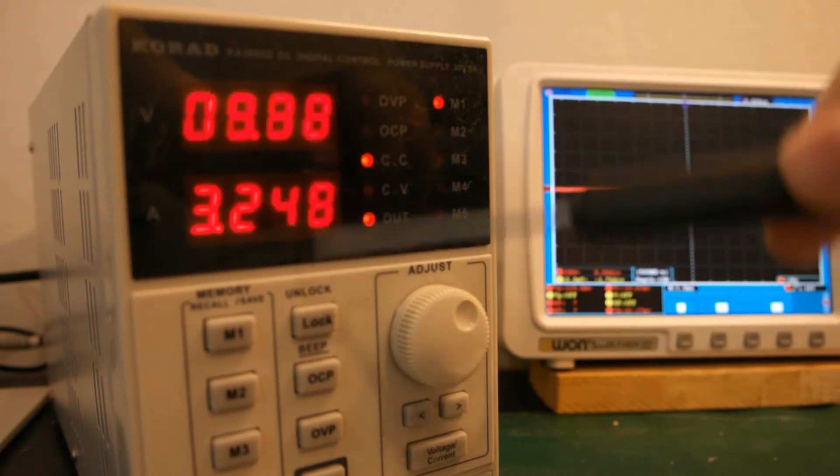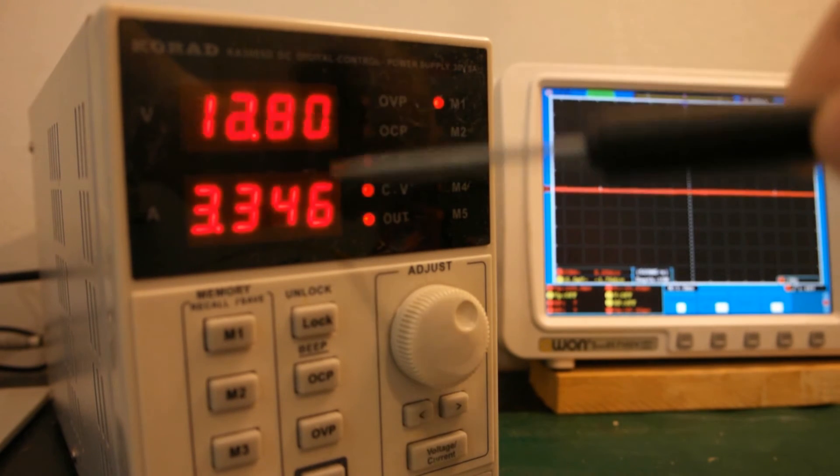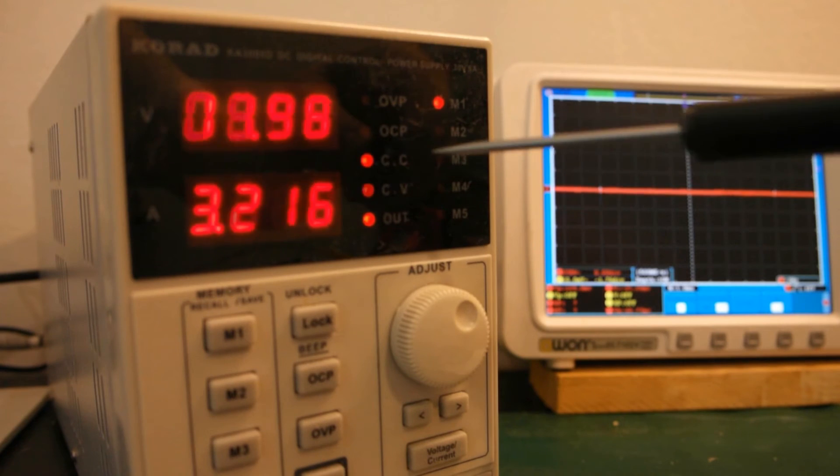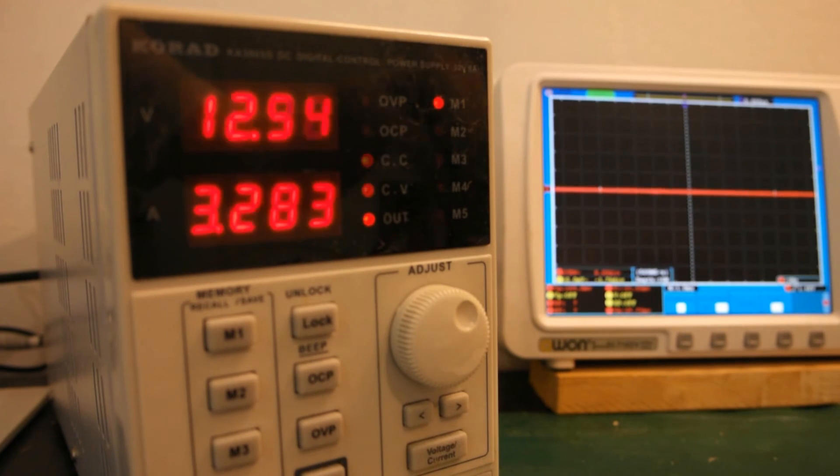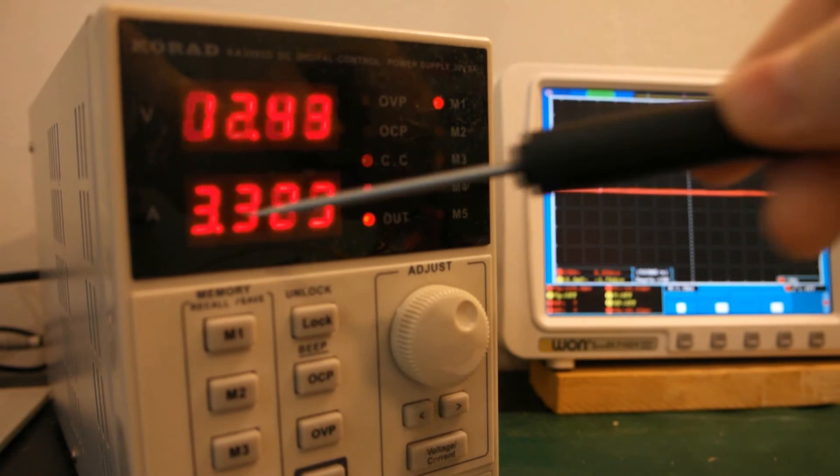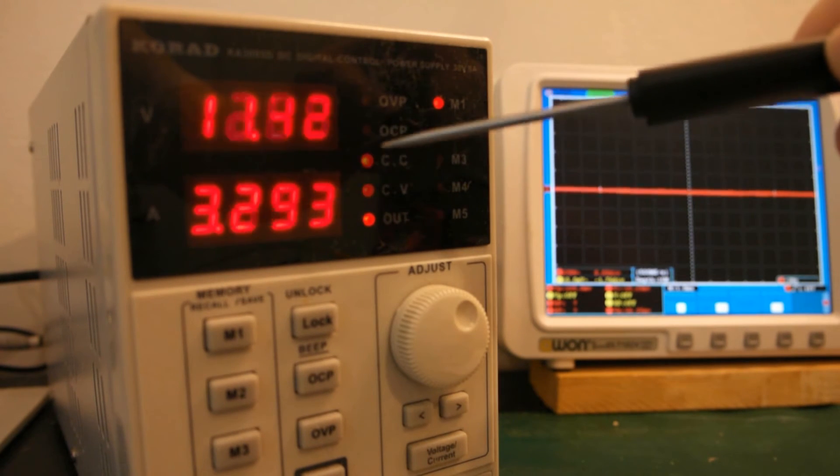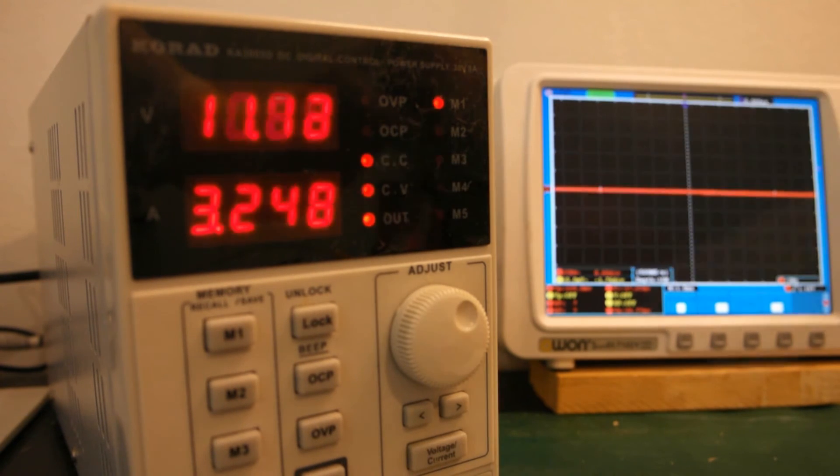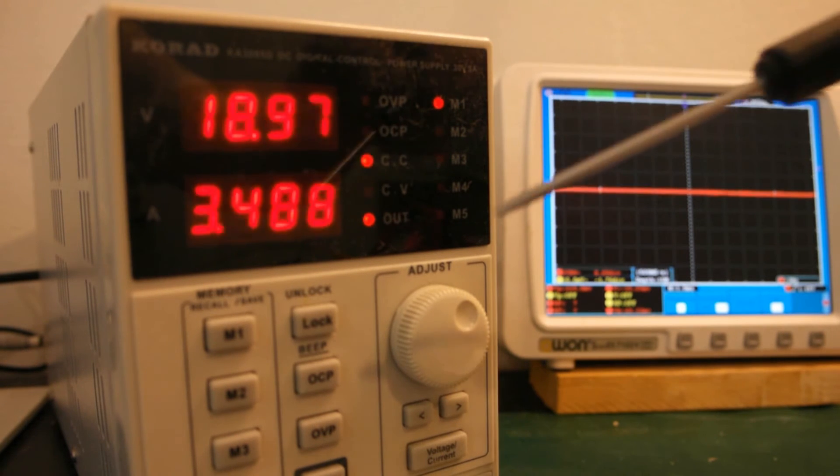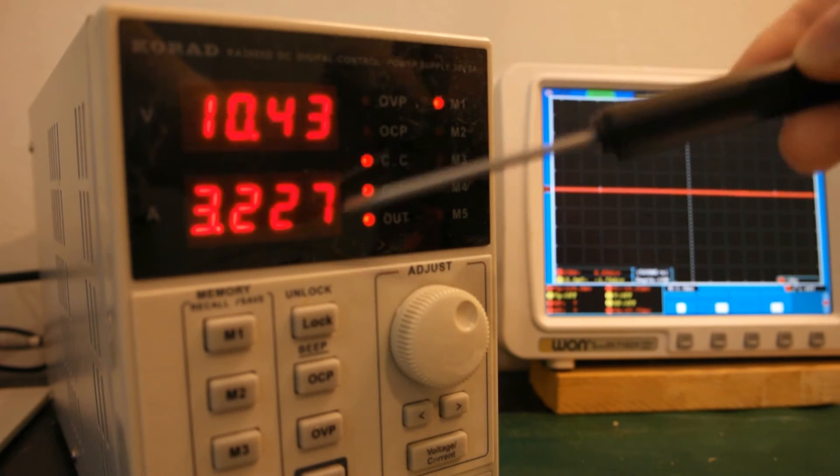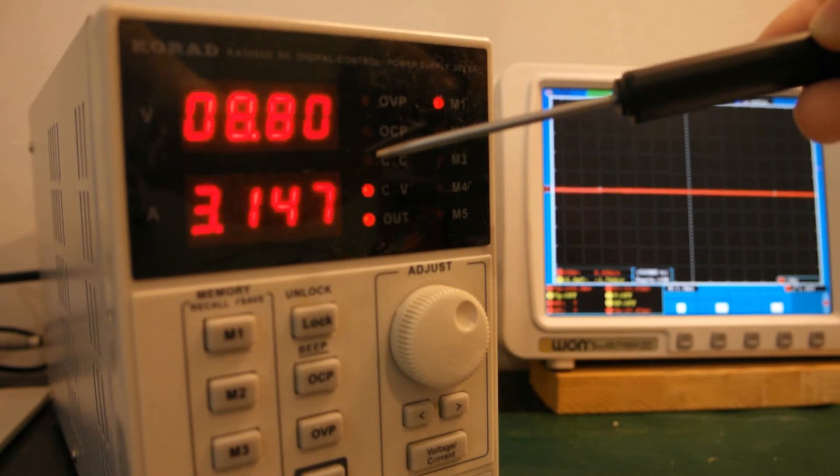It's switching between constant current and constant voltage. What happens is, the average current draw is probably around 3 amps or something. But the peak current is going to be much higher. Because the input capacitor on the boost converter is too small. And then the power supply is going to go into constant current mode. And then once the cycle finished, it's going to go back into constant voltage.